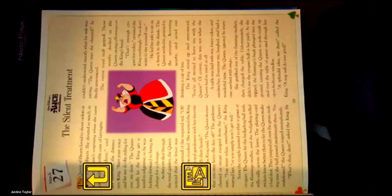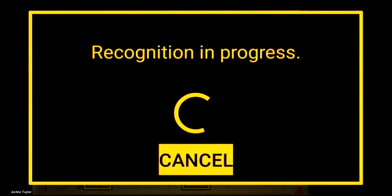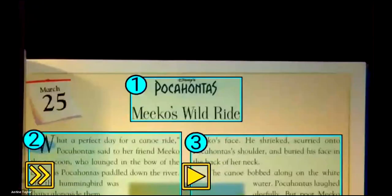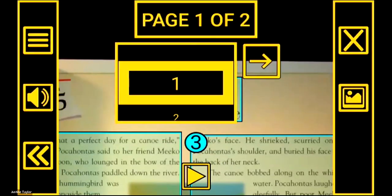I'm going to go ahead and recognize the text, so it will OCR this. We've got our zones now. You can see we have page navigation — I took two pages. You could take captures of 10 or 20 pages and they will all be listed here. You can go to the beginning of the book, the end, or navigate page by page.